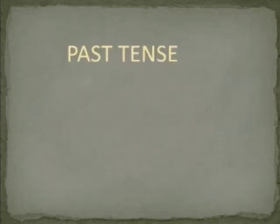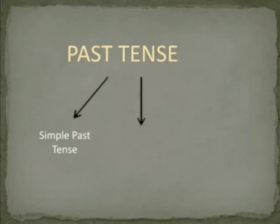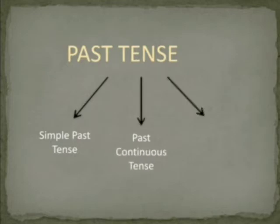Past tense is of three types. First, simple past tense. Second, past continuous tense. Third, past perfect tense.